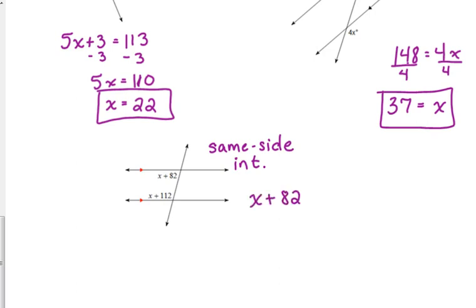So, x plus 82 plus x plus 112 is equal to 180. Add the two x's. So, we get 2x. Add 82 and 112. That's 194.